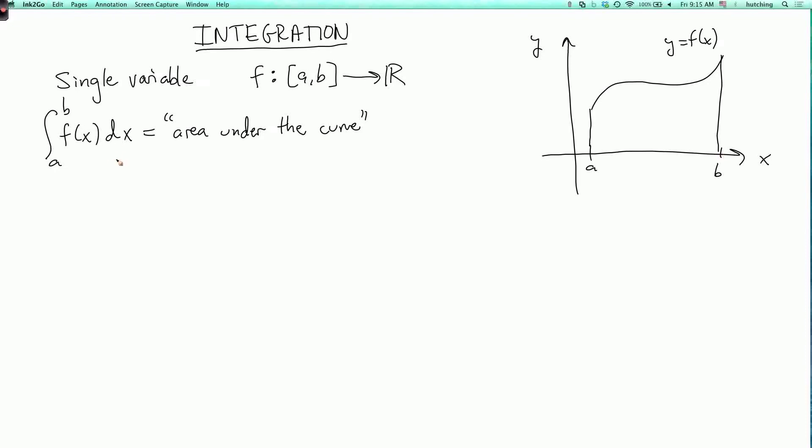And to rigorously define this, we partition the interval from a to b into n subintervals. So we'll define x0, x1, up to xn, where x0 is a and xn is equal to b.